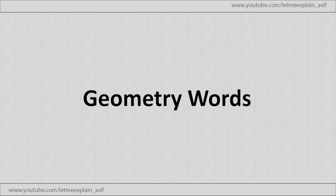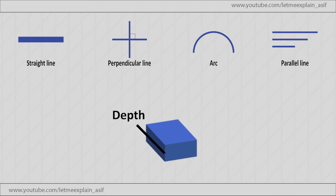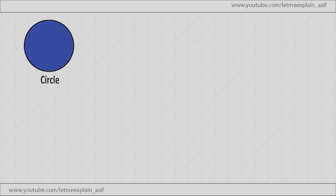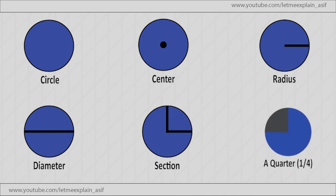Geometry words: Straight line, Perpendicular line, Arc, Parallel line, Depth, Height, Width, Circle, Center, Radius, Diameter, Section, A quarter, One fourth.